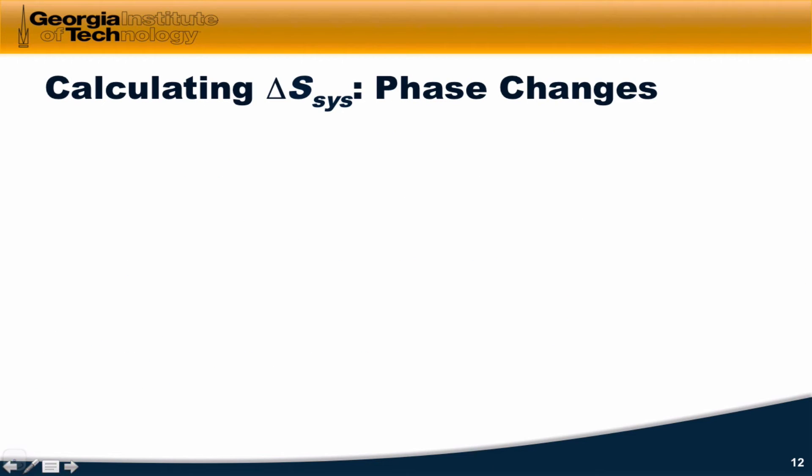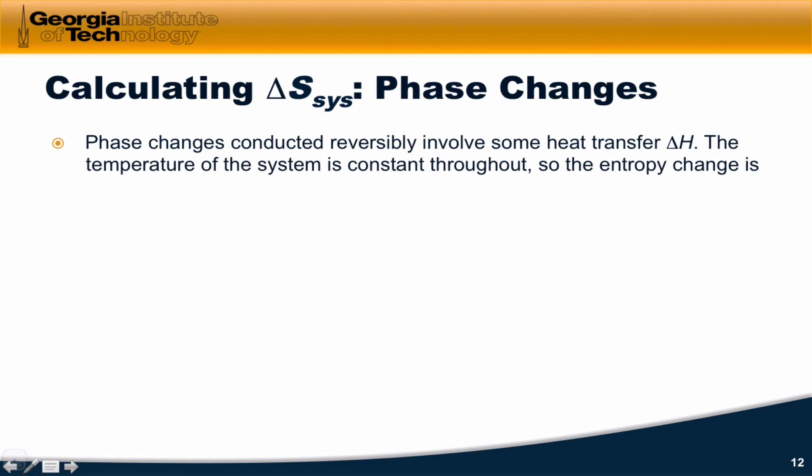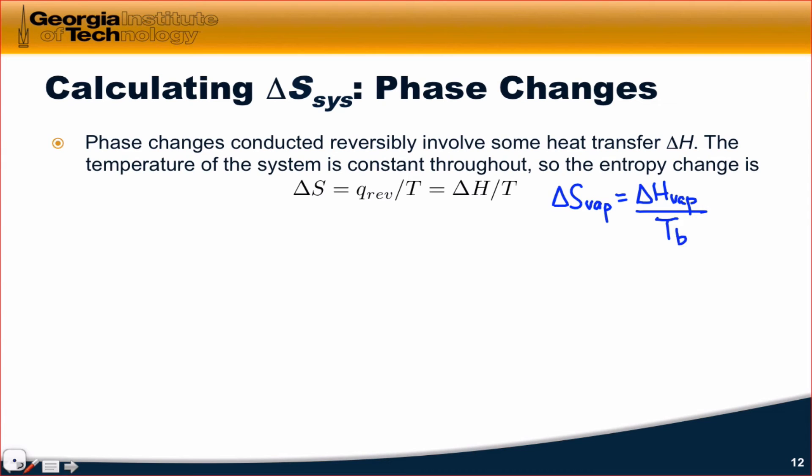Let's think about calculating ΔS for an example of a process that we've seen before, a phase change. If we conduct the phase change reversibly, there's some heat transfer involved ΔH. These are the ΔH's for example of fusion and vaporization that we've seen already. We also see in the video on heating curves that the temperature of the system remains constant throughout. So we can simply say that ΔS for a phase transition is equal to ΔH for that phase transition divided by the temperature at which it occurs. To give you a specific example of this, ΔS for vaporization, for example, is equal to ΔH for vaporization, the enthalpy of vaporization, divided by the temperature at which the phase transition occurs, which for vaporization is simply the boiling point.